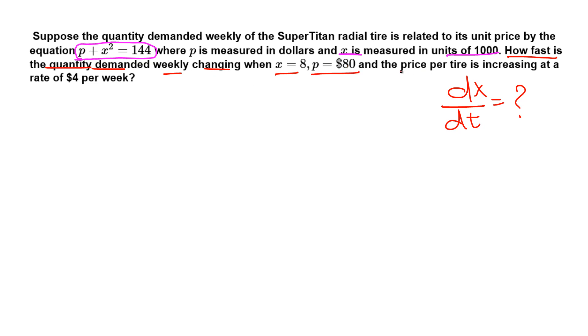And the price per tire is increasing, okay, the price per tire is increasing. That's given. So the rate d over dt, per tire, price per tire P, that is increasing means positive, at the rate of 4 per week. That's 4. So we need to determine dx over dt given dp over dt equals 4 and X is 8, P is 80.